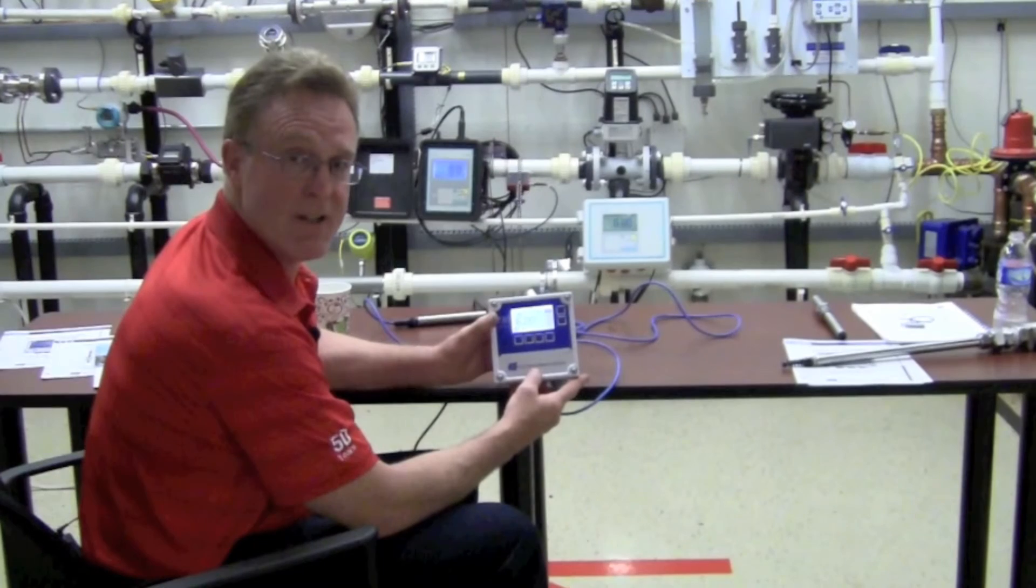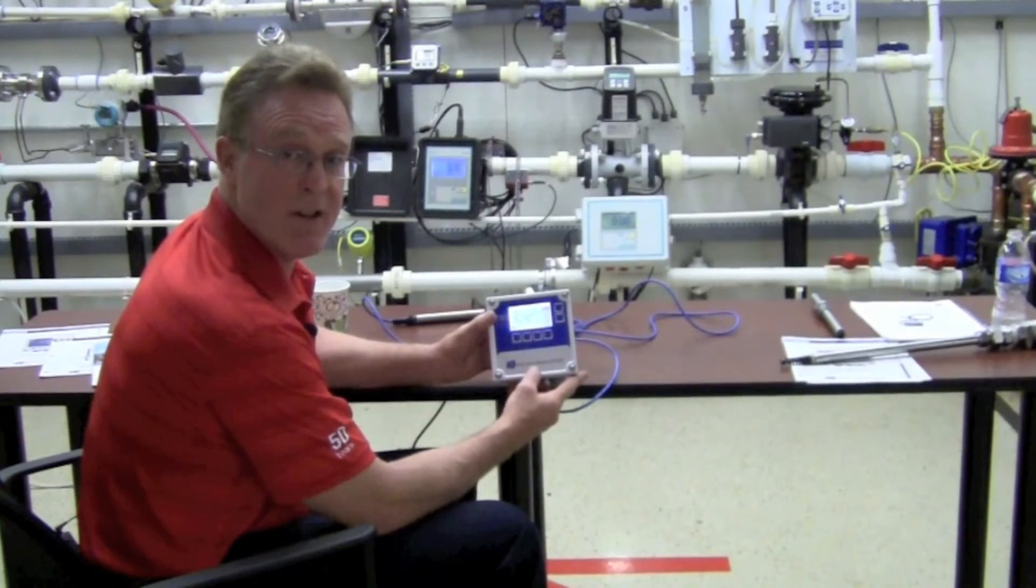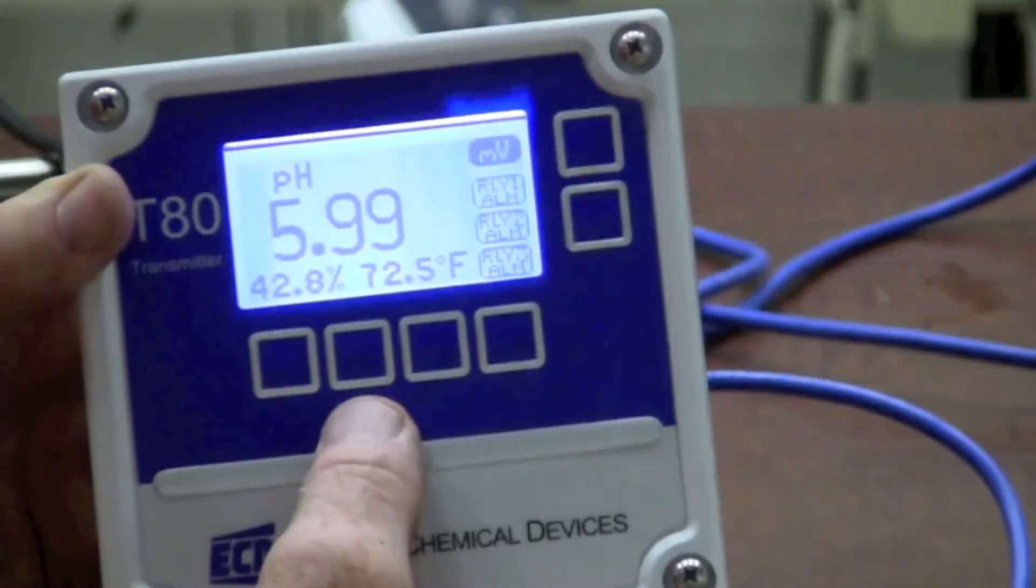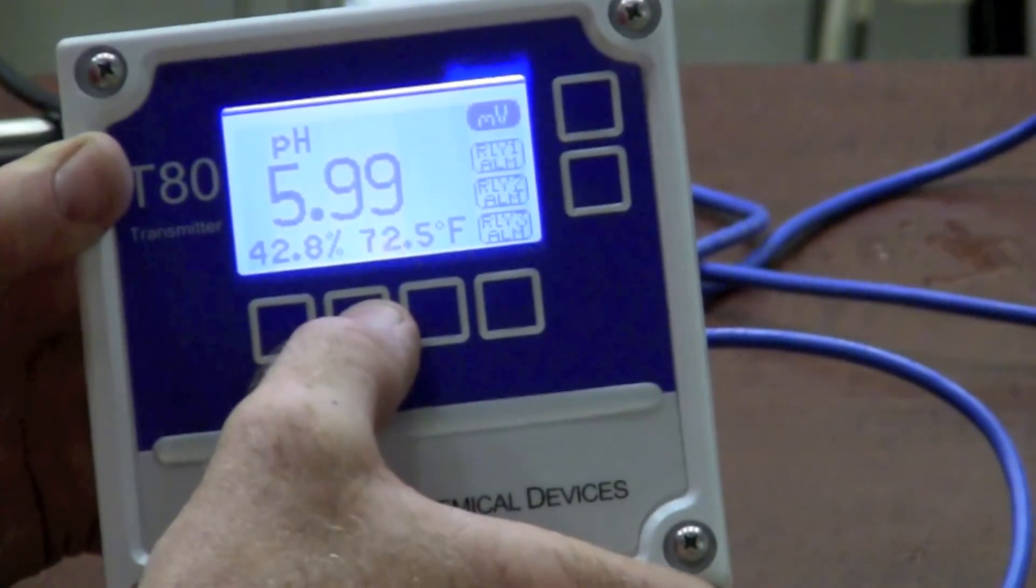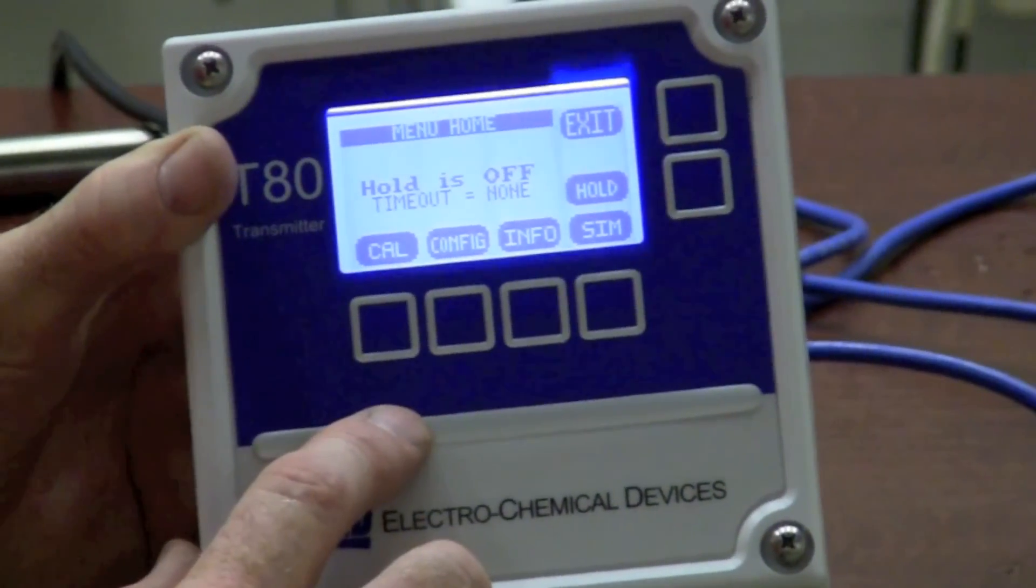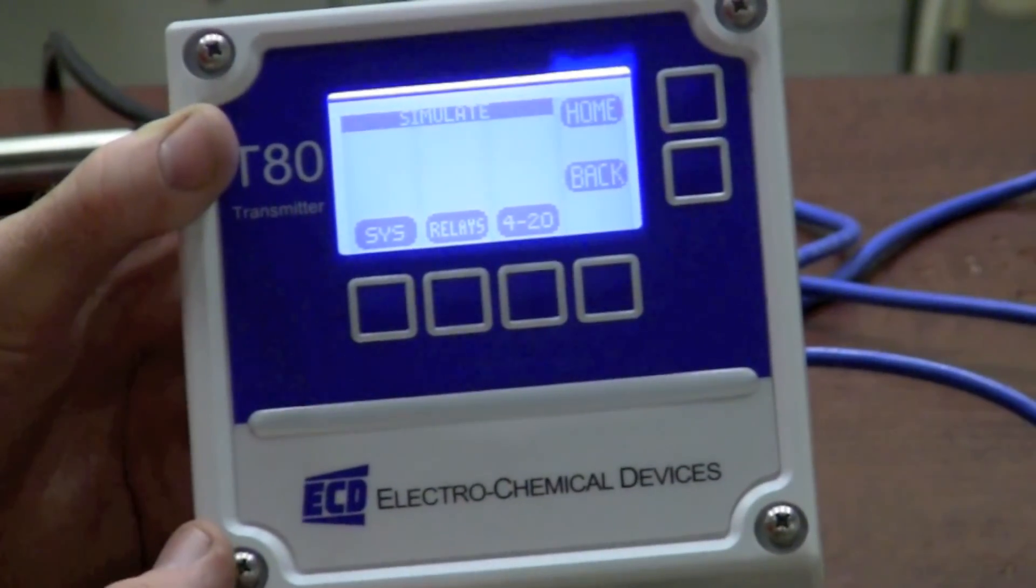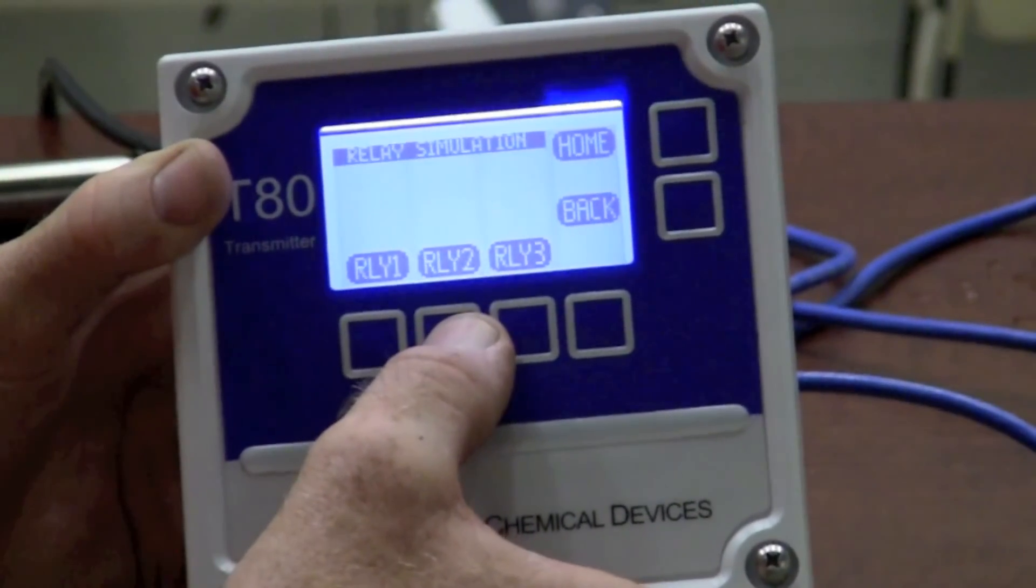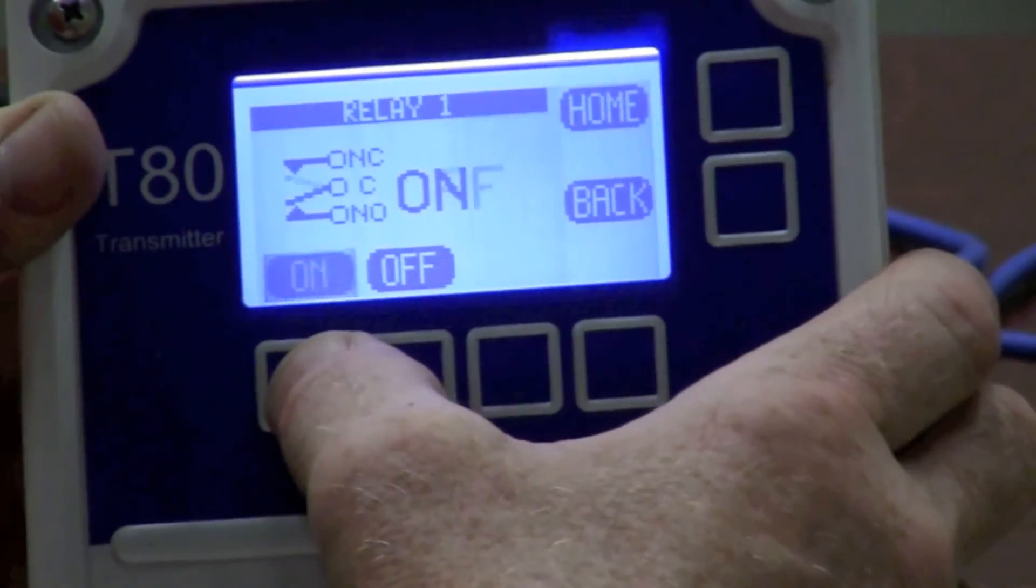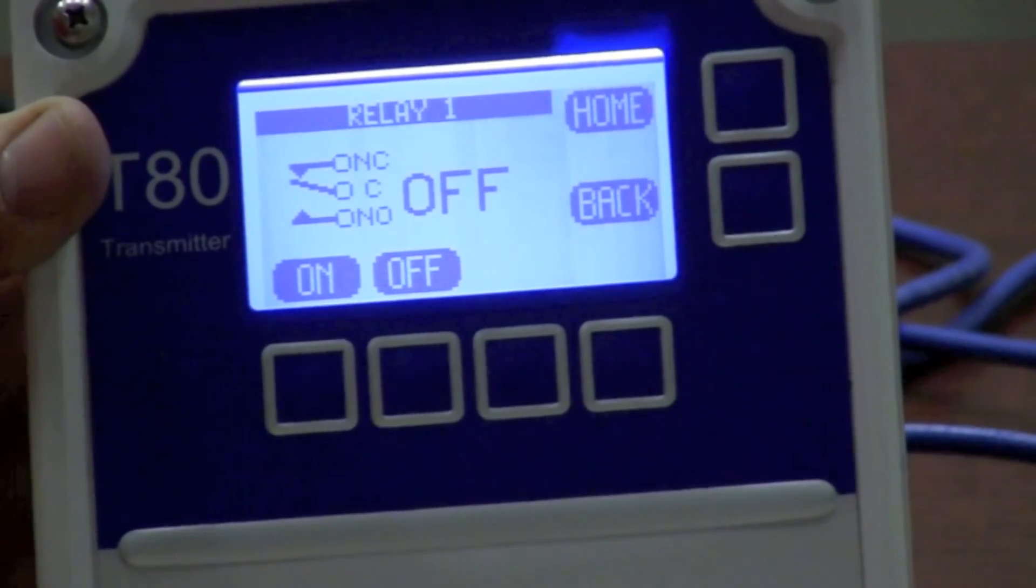Now that we've completed a calibration, I want to show you a couple nice features of the S80 slash T80 combo to make it a true winner. On the display, with the soft keys, once again, I'm going to hit any one of the four twice in succession. And instead of going into the calibration, I'm going to go into the simulate. With simulate, this allows me to fire my relays if I wish. Relay one, two, or three, and force it. This way, I can ensure that my chemical feed is going to activate as I expect it to.